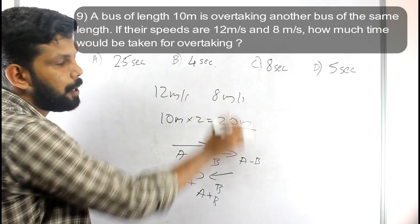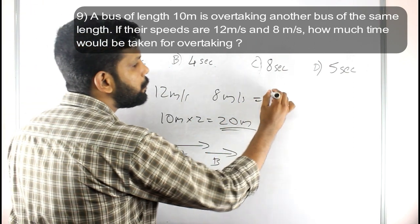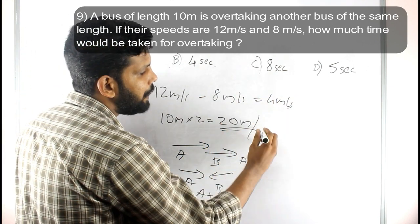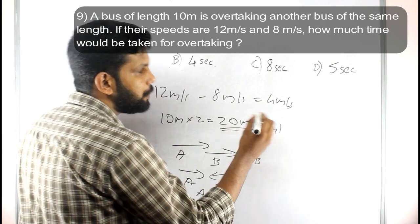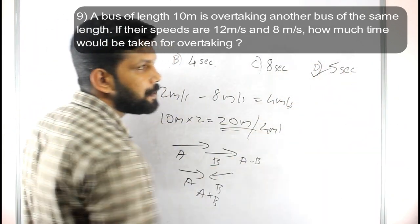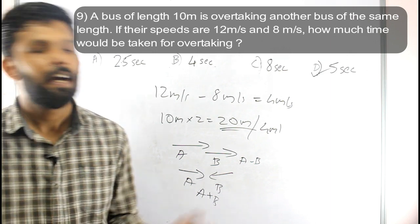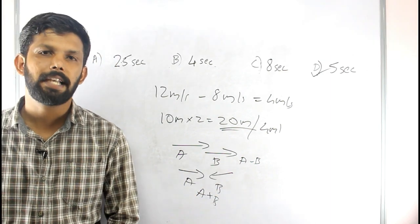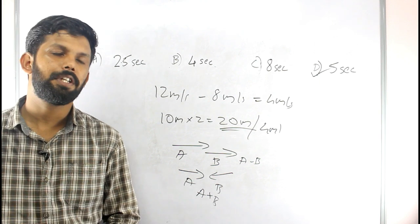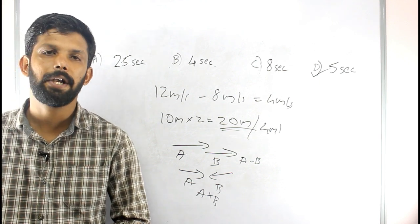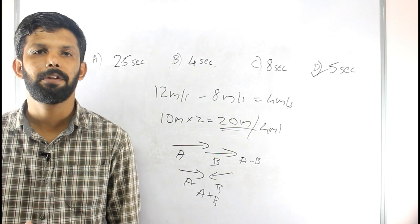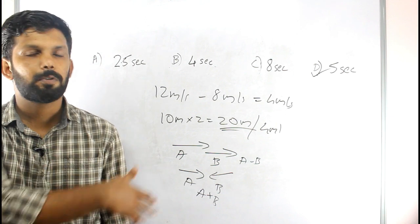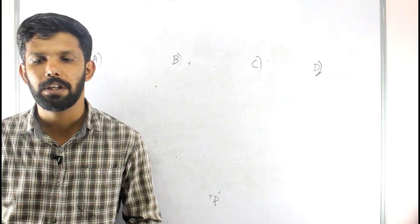Since they are moving in the same direction, the relative speed is 12 minus 8 equals 4 meters per second. The total distance is 20 meters. So time equals 20 divided by 4 equals 5 seconds. Option D is the right answer. This is the relative speed concept applied to this problem.